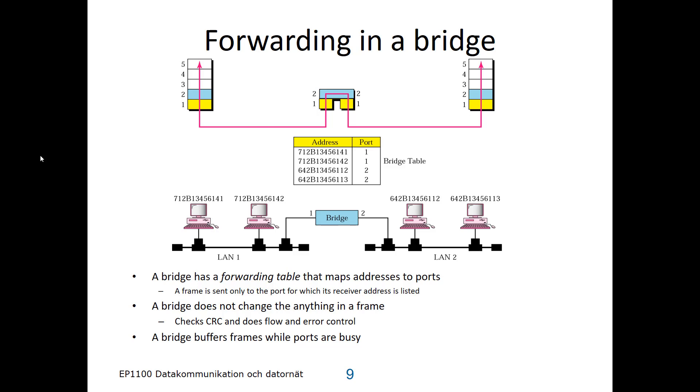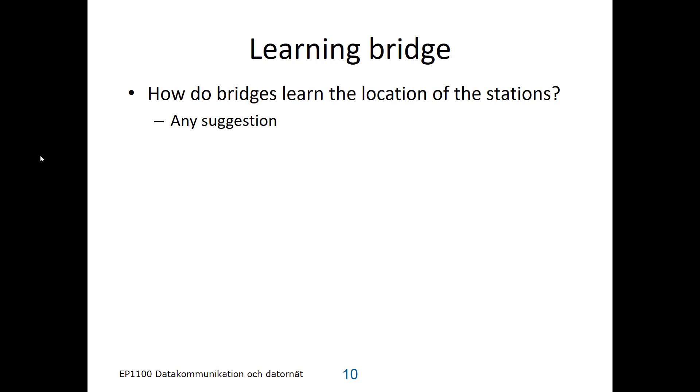We call the function of learning addresses for learning bridge. How can a bridge learn the locations? Any suggestion? Think for a while.